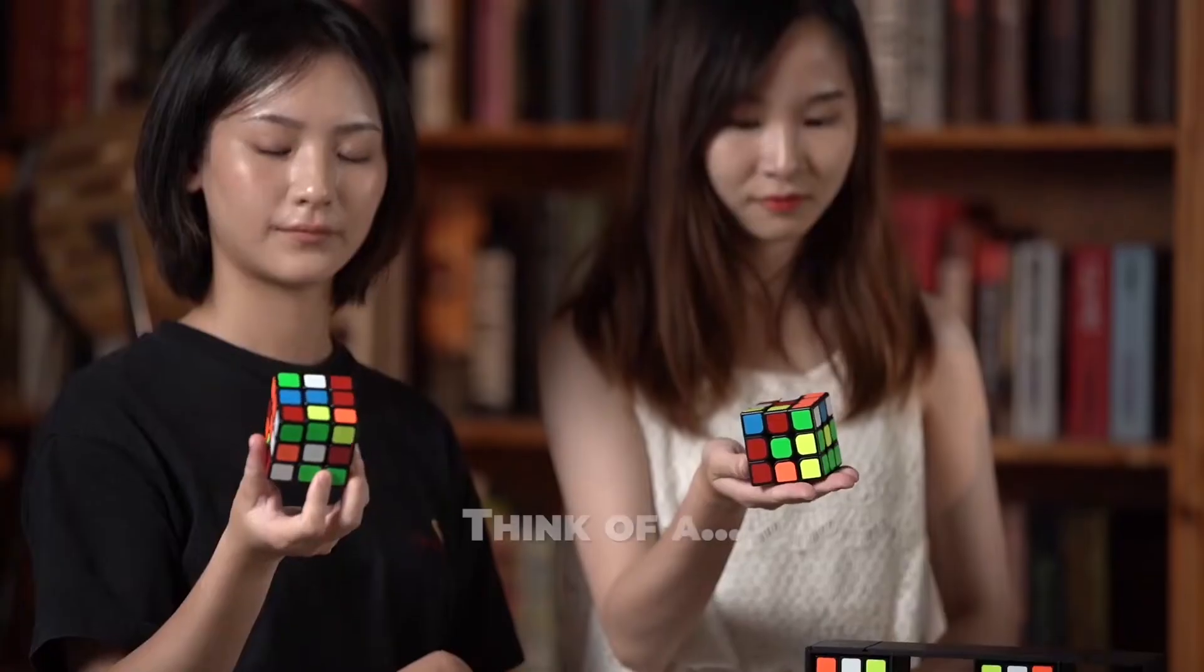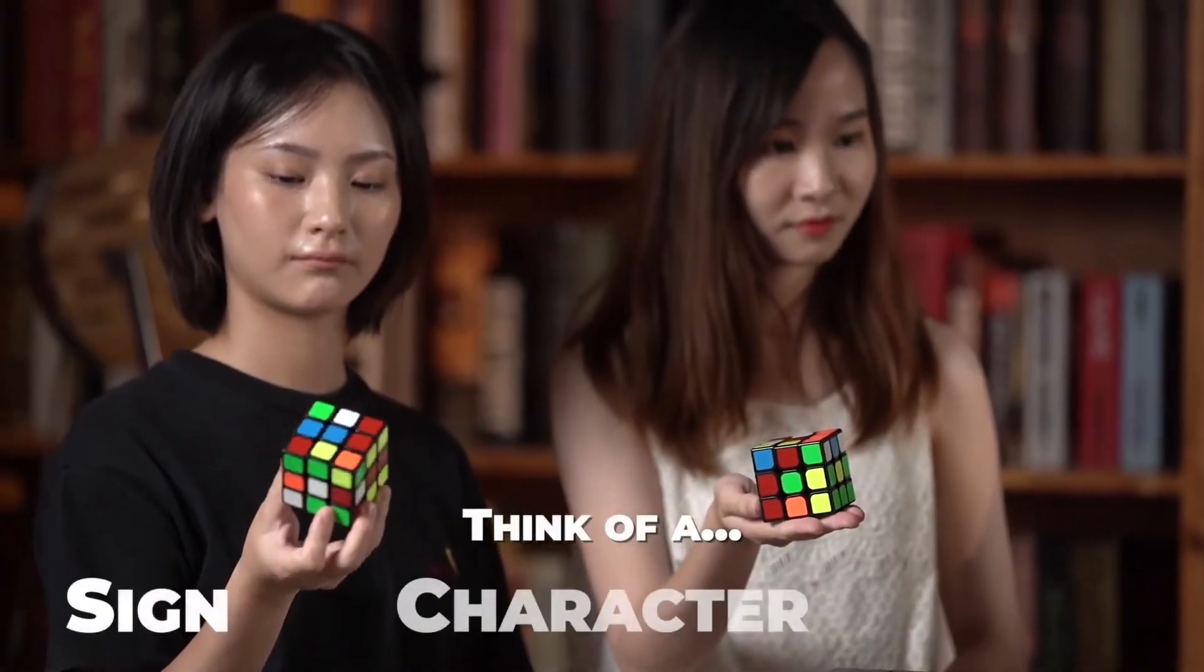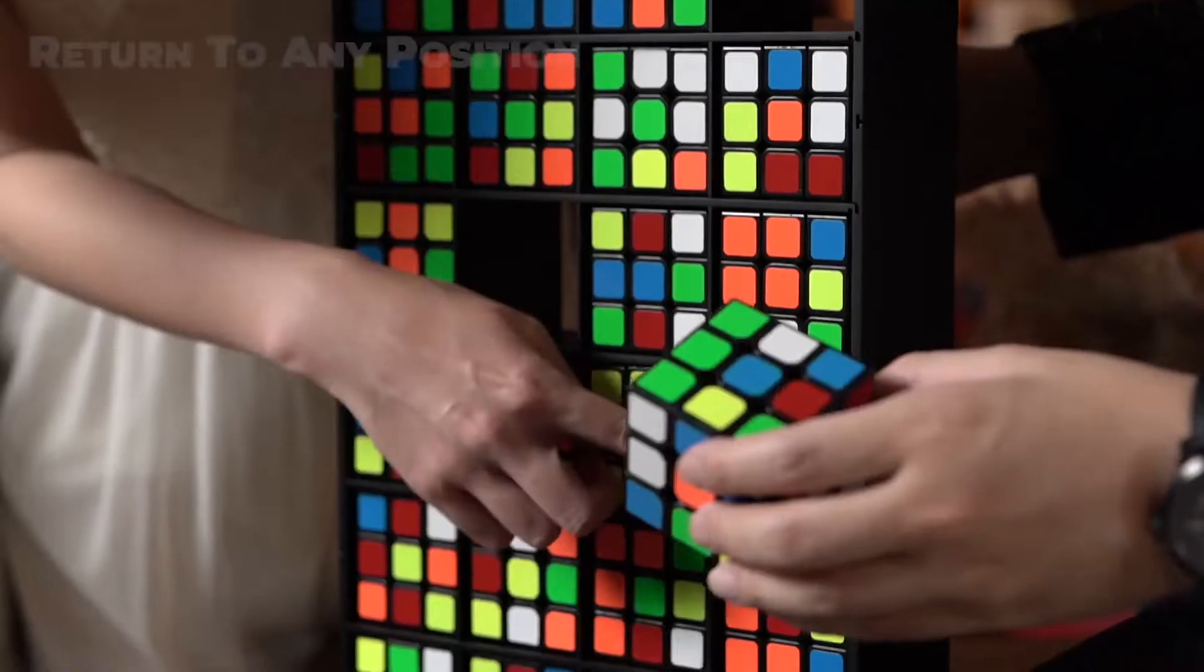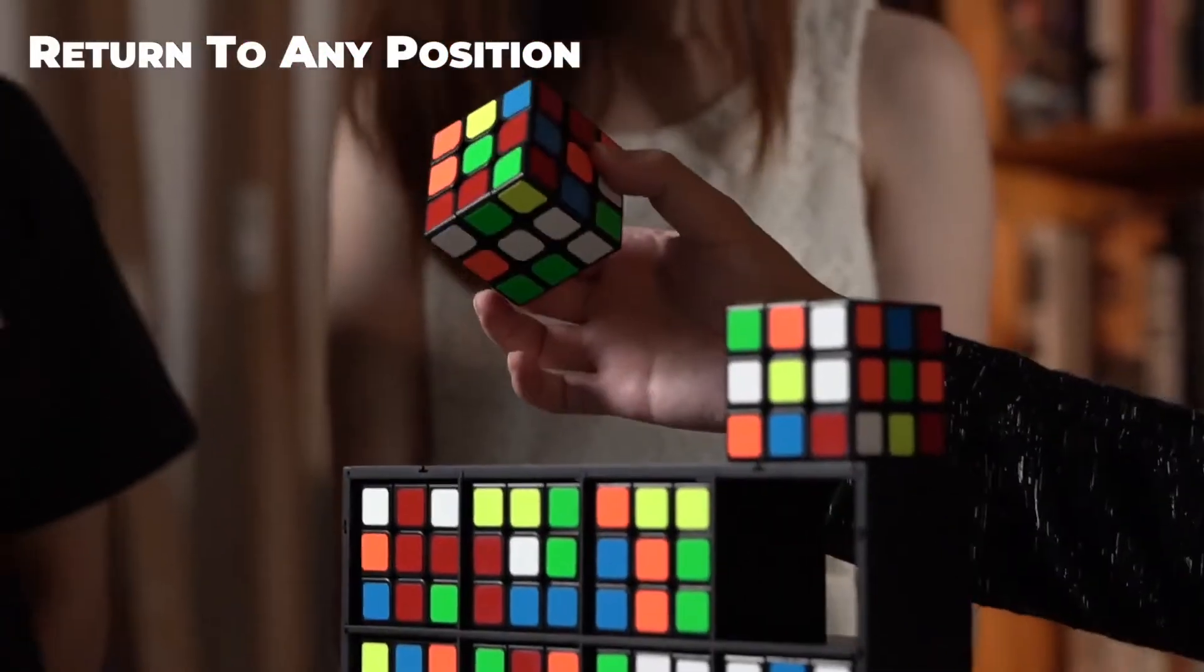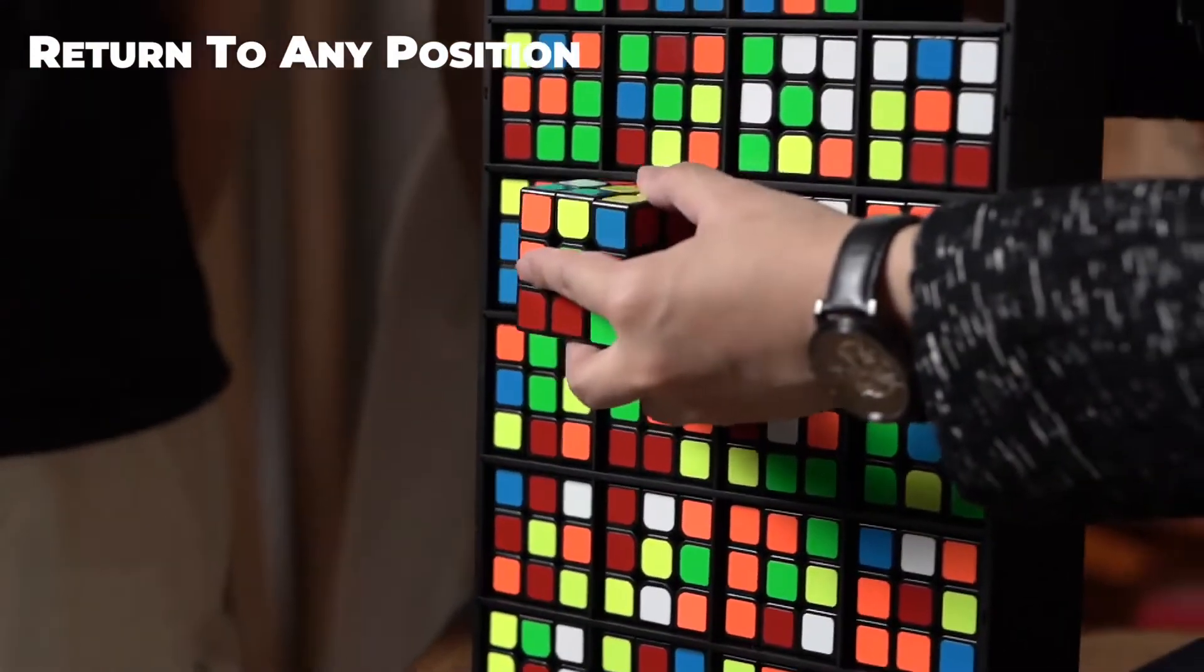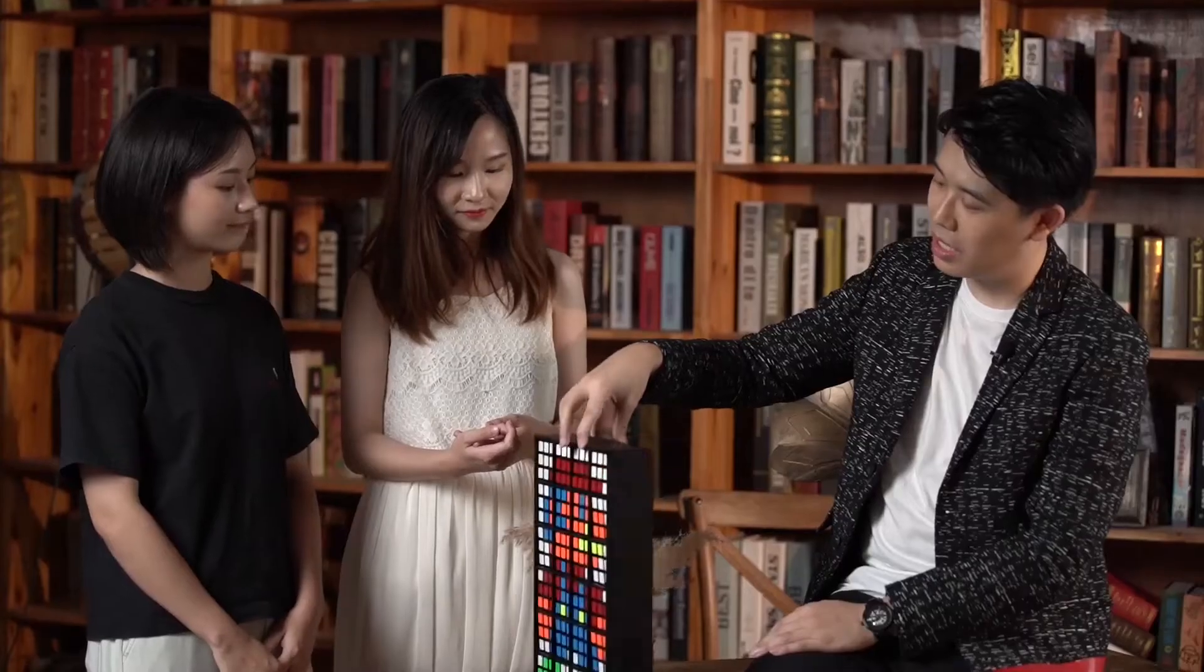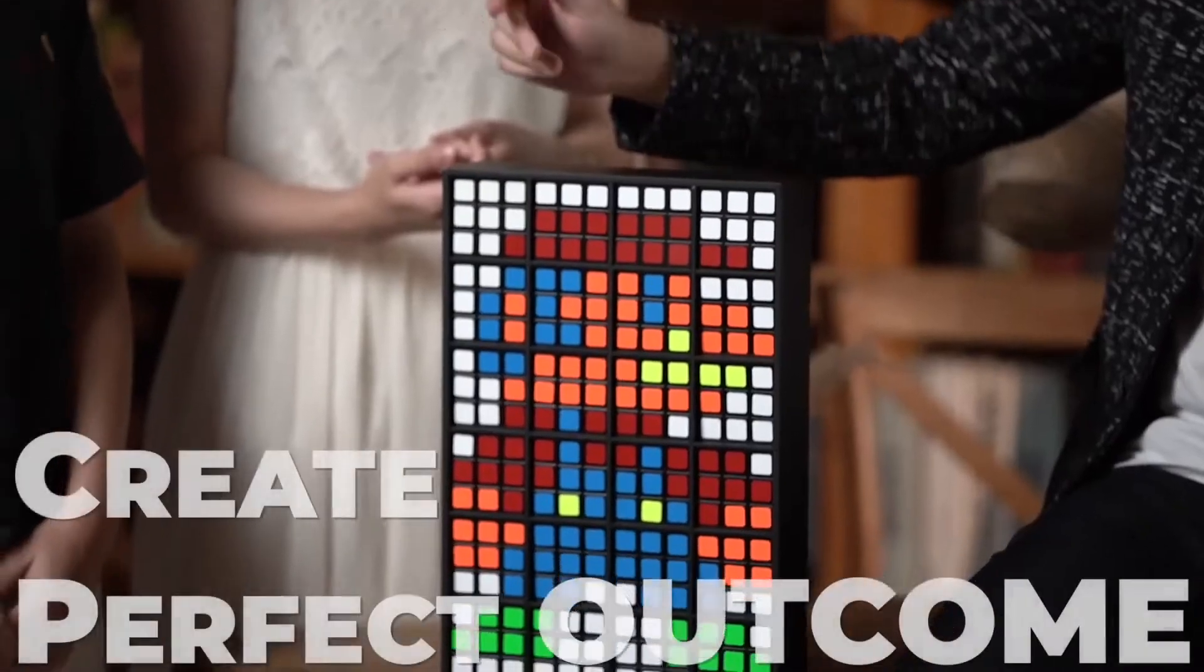The spectator thinks of a sign, character, or an image. Each cube will then return to any position to create a completely random pattern, and it will become a perfect outcome.